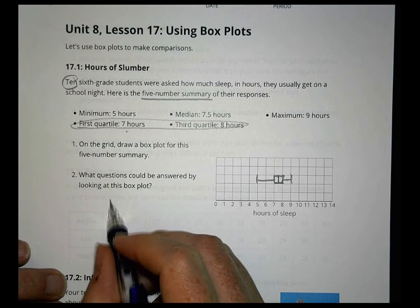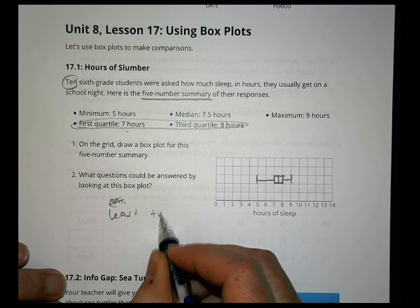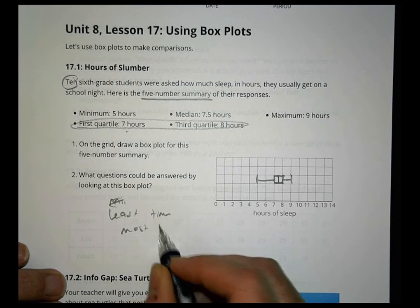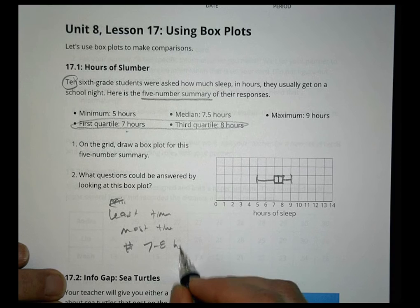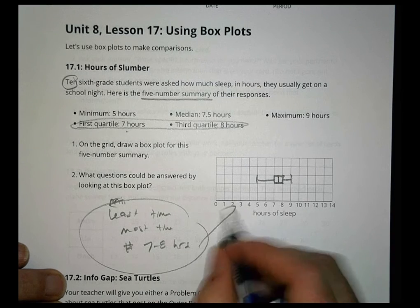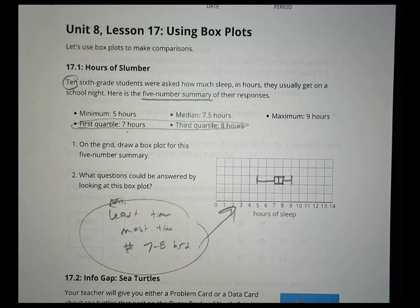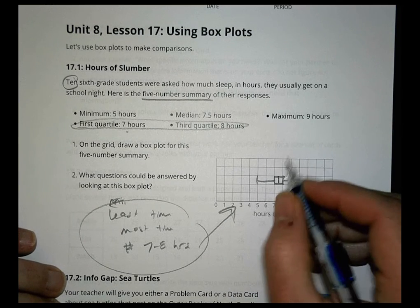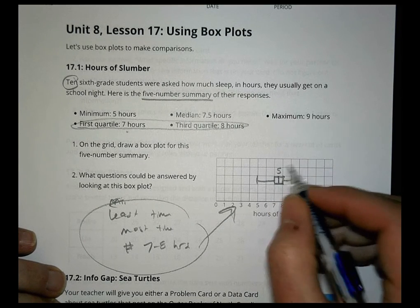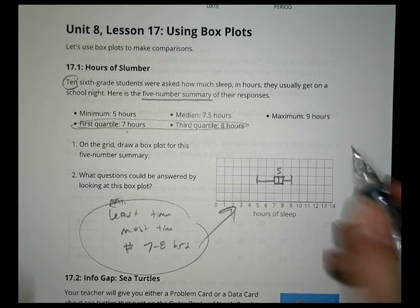Alright, so there is our box and whisker plot right there. So what can we answer? We could talk about what is the least amount of time kids sleep? What is the most time kids sleep? What number of kids get between seven and eight hours of sleep a night? These are things we could tell by that box plot right there. You can't tell everything, but we can get some values there based upon that and have a pretty good feel.